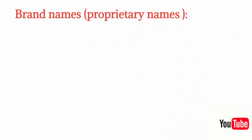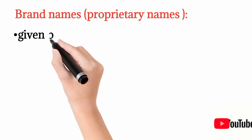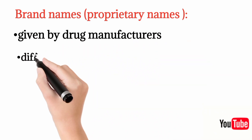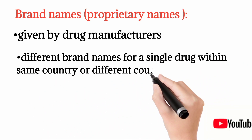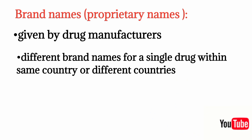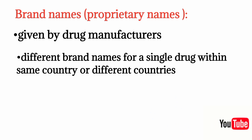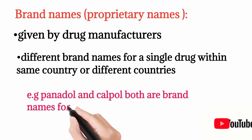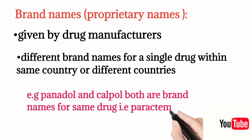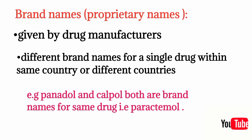Then we have brand names, also known as proprietary names. Brand names are given by the manufacturer companies, so the same generic drug can have different brand names from different companies. They are typically shorter and easier to recall. For example, panadol and calpol are both brand names for the same drug, paracetamol, given by different companies.